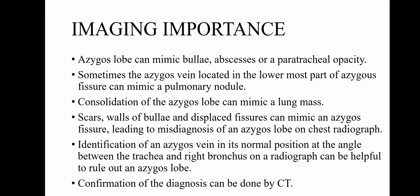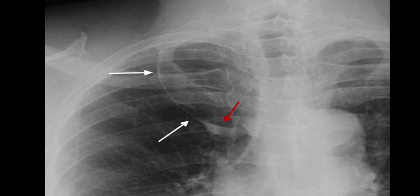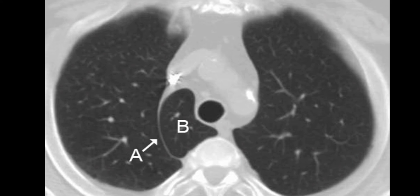Confirmation of the diagnosis can be done by CT. This is a chest X-ray showing the presence of the azygous fissure indicated by the white arrows, and the presence of the tear-shaped azygous vein at the base of the fissure indicated by the red arrow. This is a CT scan of the chest which depicts the fissure as a curved or C-shaped line indicated by the alphabet A, and we are able to see the presence of the azygous lobe indicated by the alphabet B.